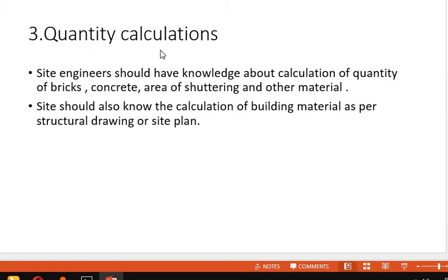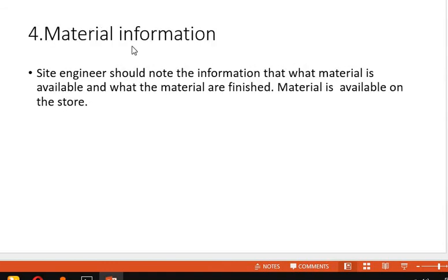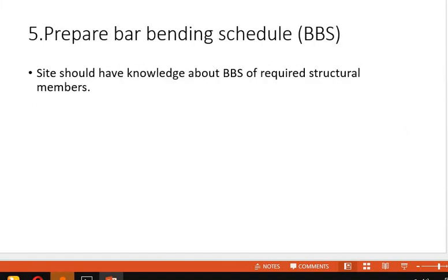According to the site plan and structural drawing, you have to specify what amount of materials are required, and the estimation will also be calculated from the quantity calculation. The next thing is material information. A site engineer should note what materials are available and what materials are finished, so that you can order or purchase from the market, ensuring there are no shortages when work starts.